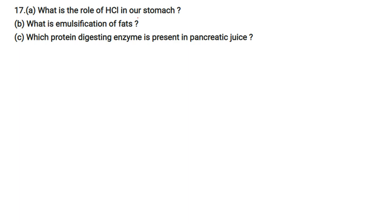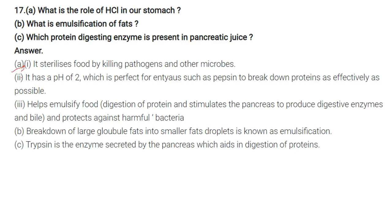What is the role of HCl in our stomach? It sterilizes food by killing pathogens and microbes. It has a pH of 2, which is perfect for enzymes like pepsin to break down proteins effectively. It also helps emulsify food — the breakdown of large fat globules into smaller fat droplets — and stimulates the pancreas to produce digestive enzymes and bile, and protects against harmful bacteria.